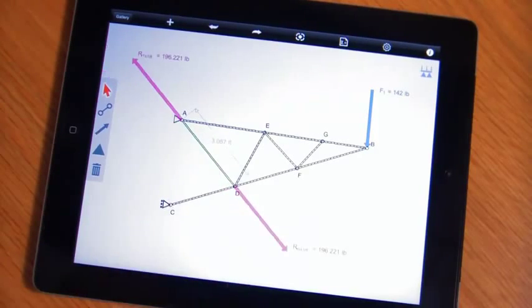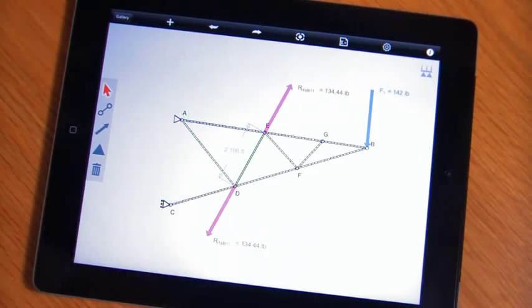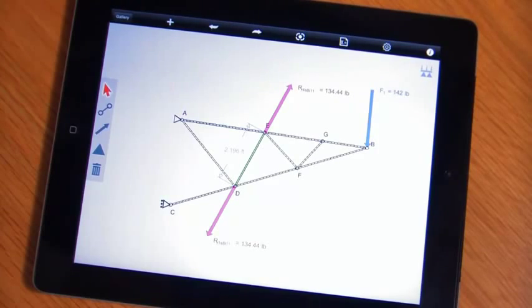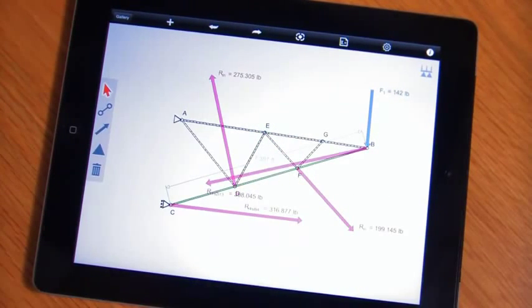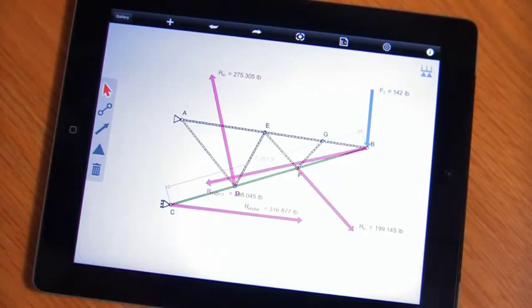However, we're able to solve the system with ease and in real time. Notice as I isolate individual members in the structure, I can get a visual reference for whether the member is in tension, like this member, or compression. I can also see the reaction forces across just a member. And by clicking away from the model, I get the reaction forces across the supports.